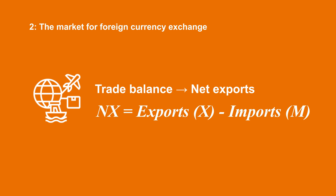Let's start with the market for foreign currency exchange. First of all, we need to define the concept of trade balance and net exports. When we purchase goods and services from another country, we are importing. And when other countries buy goods and services from the economy that we are studying, this economy is exporting. Note that these concepts depend on which point we stand upon — the economy's imports are foreign countries' exports and the other way around. In order to calculate the foreign sector's participation, we make the difference between what this economy receives and what this economy spends abroad: exports or X minus imports or M, or as we say, net exports.